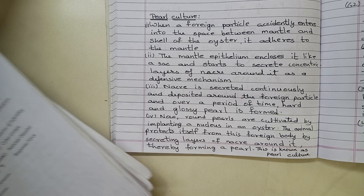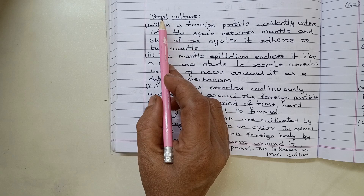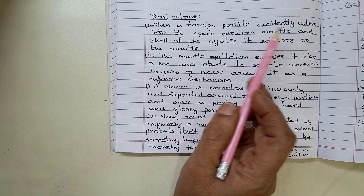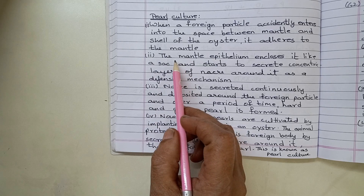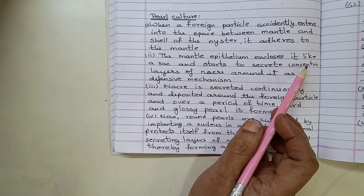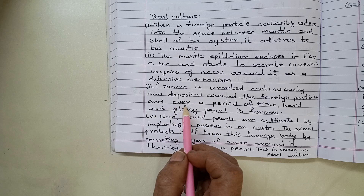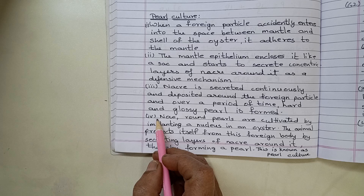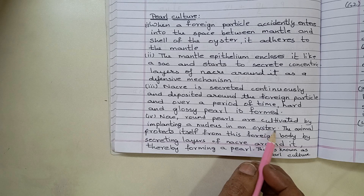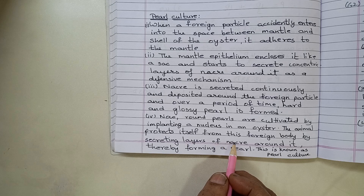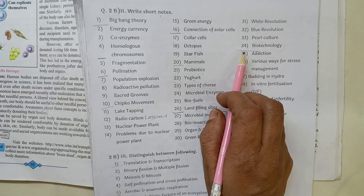Question 33: Write a short note on pearl culture. This content is not in the 10th standard textbook but was studied in an earlier standard. When a foreign particle accidentally enters the space between the mantle and shell of an oyster, it adheres to the mantle. The mantle epithelium encloses it like a sac and secretes concentric layers of nacre around it as a defensive mechanism. Nacre is secreted continuously and deposited around the foreign particle, and over time a hard and glossy pearl is formed. Round pearls are cultivated by implanting a nucleus in an oyster; the animal protects itself by secreting layers of nacre around it, thereby forming a pearl. This is known as pearl culture.